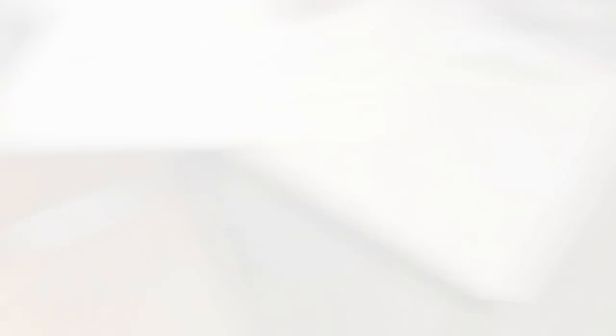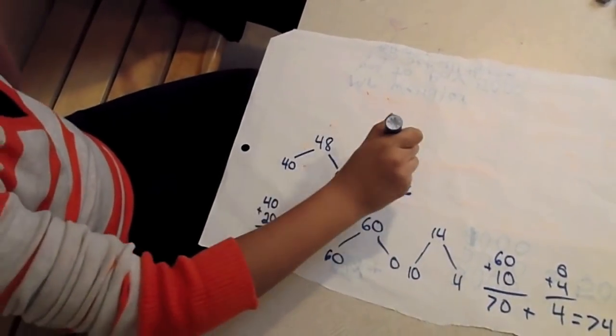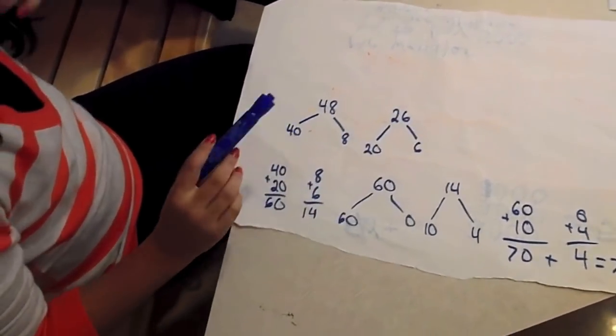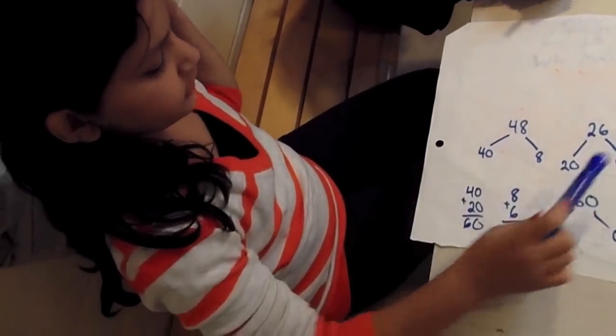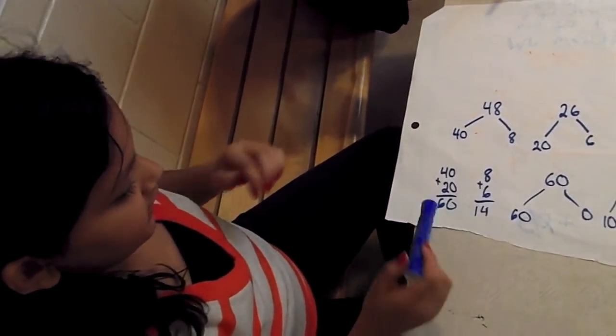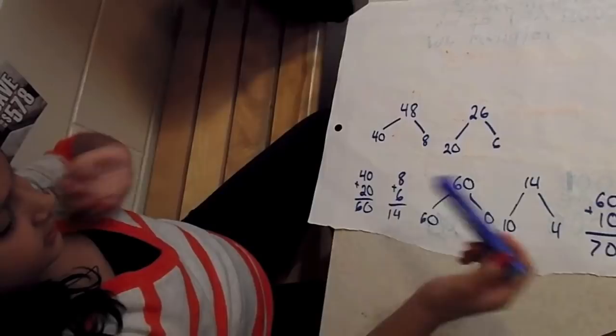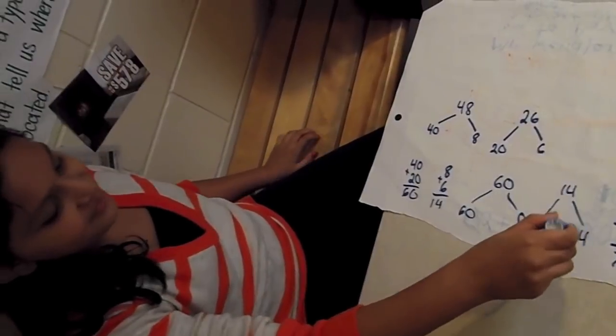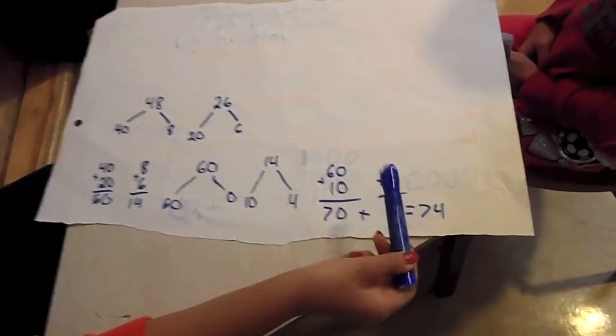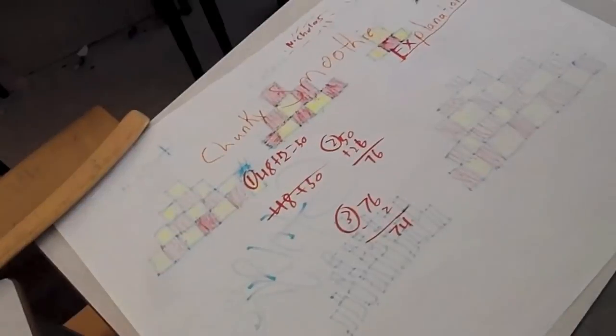We took 48 and wrote it in expanded form. We took 26 and did it in expanded form. Then we added up the two tens, which is 40 and 20, so we got 60. Then we added the two ones and got 14. Then we took the total of the tens and put that in expanded form, and the total of the ones in expanded form. Then we added the tens with the tens and got 70, added the ones with the ones and got 4. So we added the tens plus the ones and got 74.